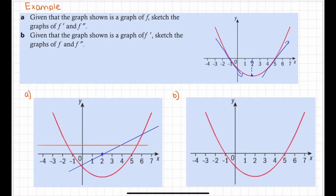In part b, we've been told that this graph is the first derivative. When a graph is the first derivative, how we approach sketching things is slightly different. Because it's a quadratic for our first derivative, it means our original function will be a cubic function, and our second derivative would be linear. The second derivative will still be the same straight line as before.